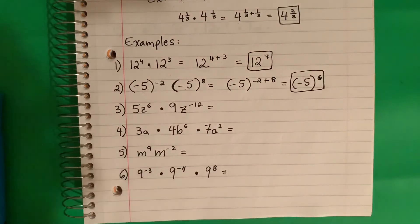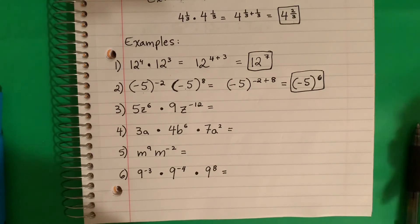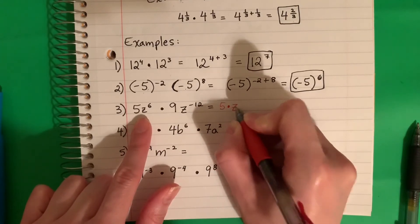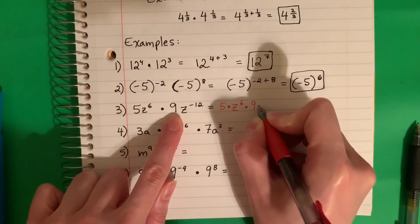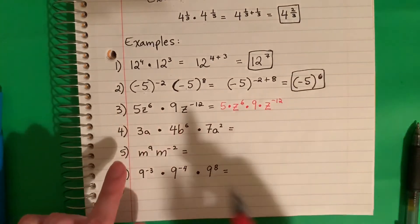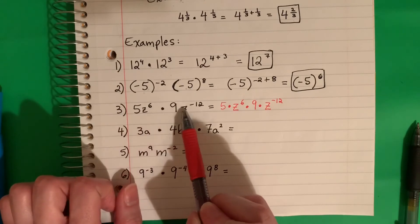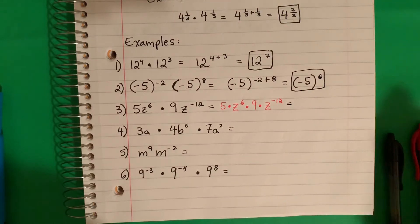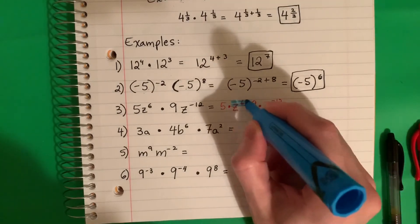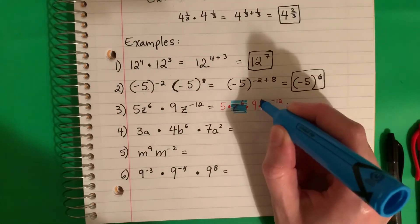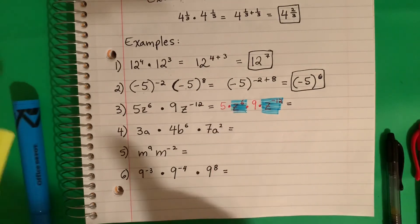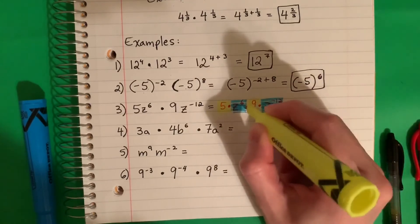Let's try the next one — this one is a little different. I actually have 4 bases, tengo 4 bases. This is 5 times Z^6 times 9 times Z^-12. So 5 and Z are 2 bases, and 9 and Z are 2 bases. The ones that are the same — las que son iguales — the Z's are the same. And the ones without letters, no tienen letras, so they are the same — regular numbers, números regulares.